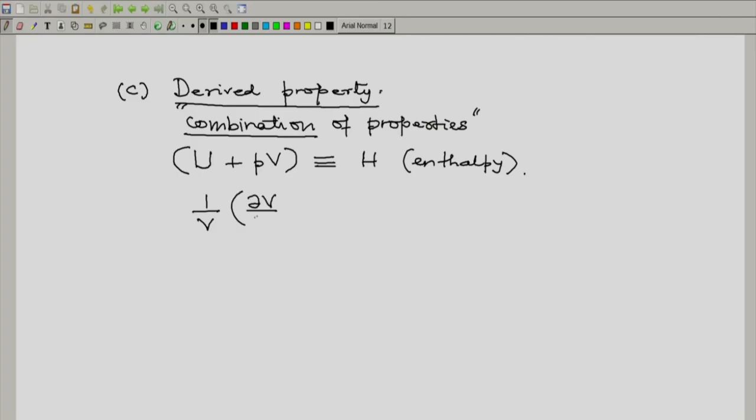For example, for a fluid, this is known as alpha and is known as the isobaric thermal expansion coefficient. And there are many others.